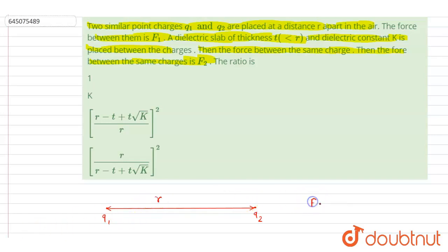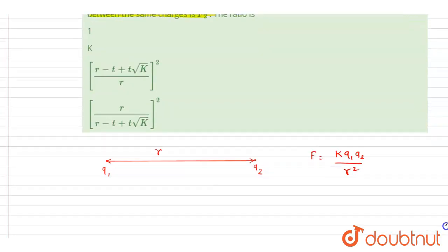I will write down the force between the two is k q1 q2 by r square. Now what happened here? In between them a dielectric of dielectric constant k and thickness t is kept.